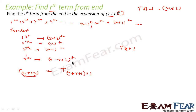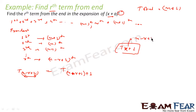Because the rth term from the end is T(n−r+2), and T(n−r+2) = T((n−r+1)+1). We know the general term T(k+1) for (x+a)^n is nCk · x^(n−k) · a^k. So we replace k with n−r+1.